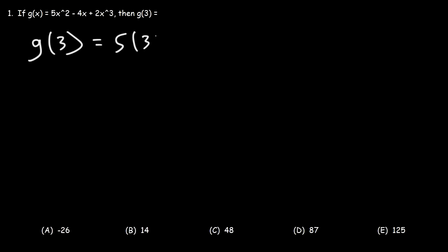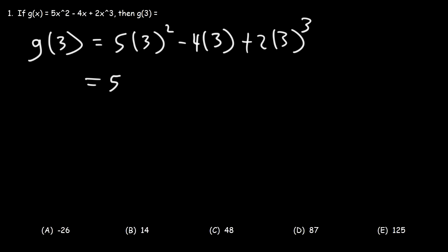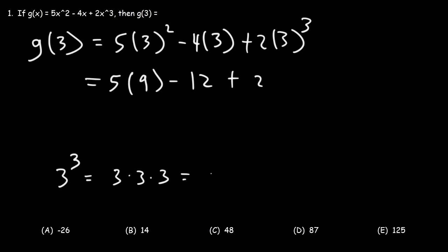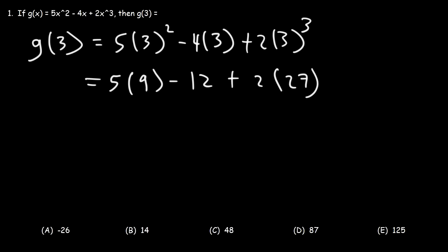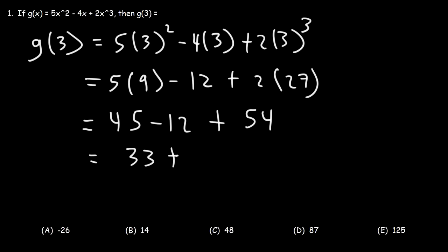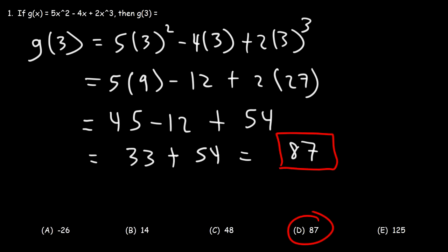So instead of 5x squared, it's going to be 5 times 3 squared. And instead of 4x, it's going to be 4 times 3. Now 3 to the second power is 3 times 3, which is 9. 4 times 3 is 12. And 3 to the third power is 3 times 3 times 3: 3 times 3 is 9, and 9 times 3 is 27. So 5 times 9 is 45. 2 times 27: 2 times 20 is 40, 2 times 7 is 14, so 40 plus 14 is 54. 45 minus 12 is 33, and 33 plus 54 is 87. So D is the right answer for this problem.